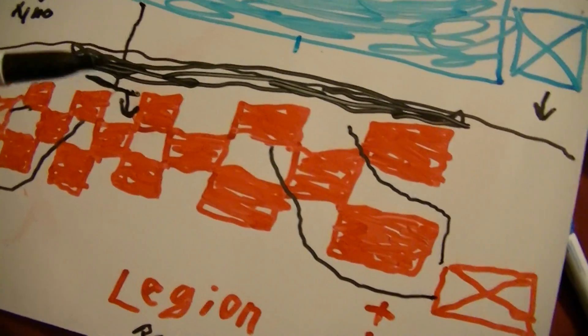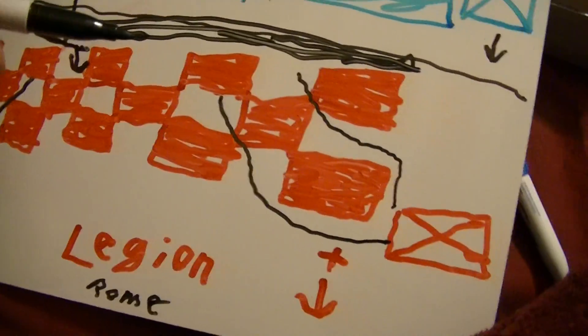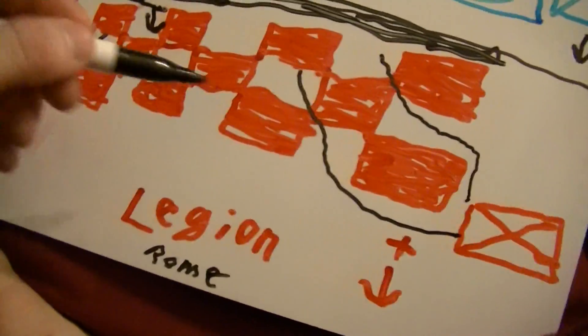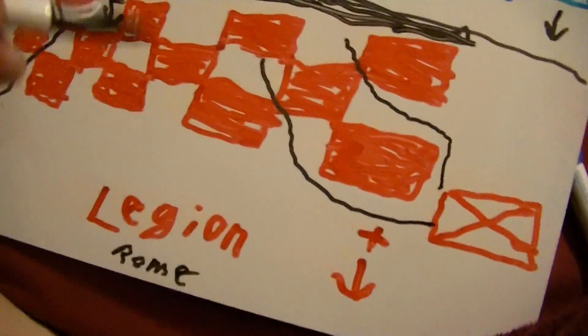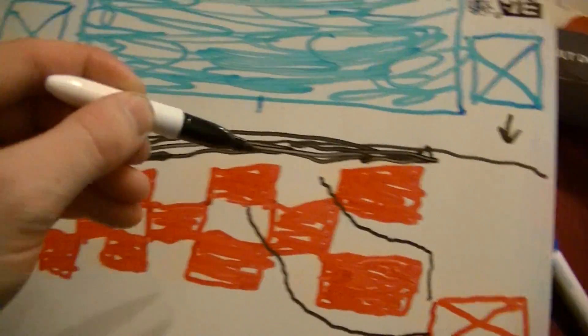I always hear how even the front line is composed of hastati, principes, and velites, or triarii, and then later on in periods, they switched up hastati and the order. But, what I'm saying is, did they fight like a wall?